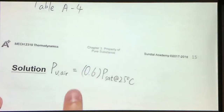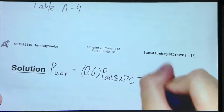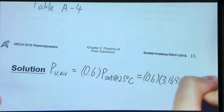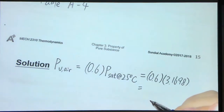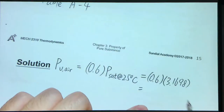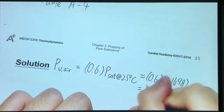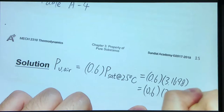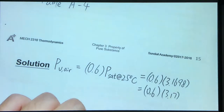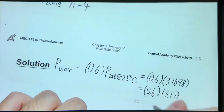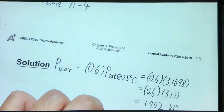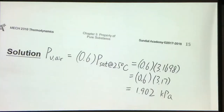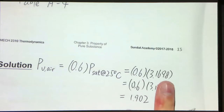So the saturation pressure is 3.1698 kPa. From this we can find the vapor pressure — taking it to be 3.17, we get 0.6 × 3.17 = 1.902 kilopascal. The saturated pressure is in kilopascal, so this value is also in kilopascal.